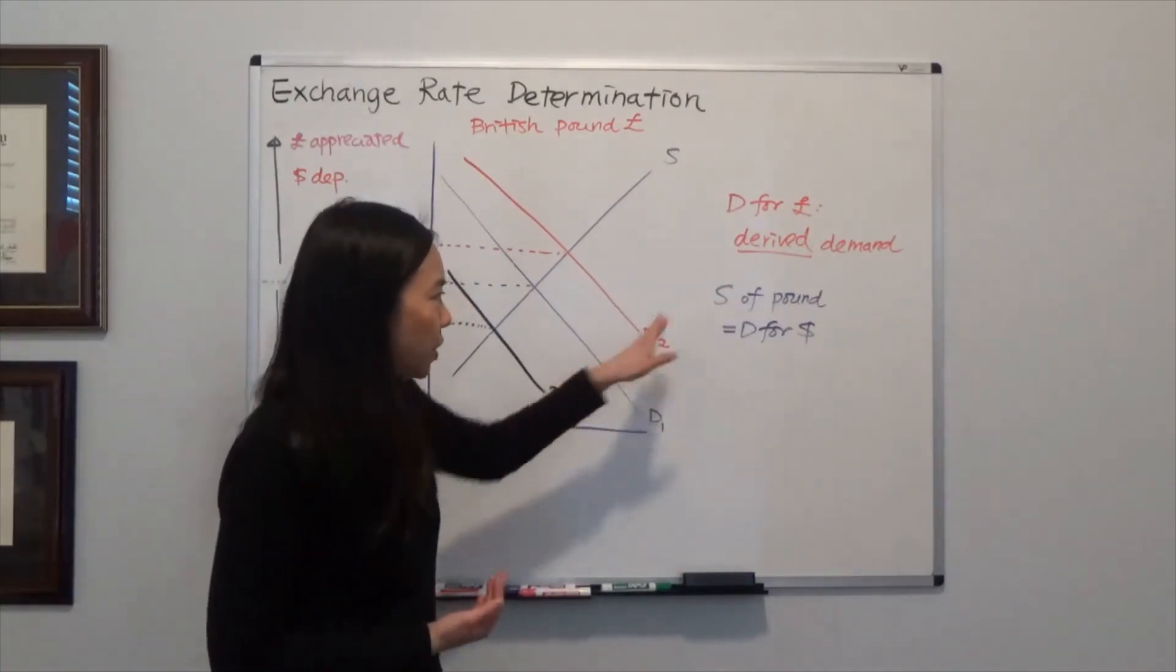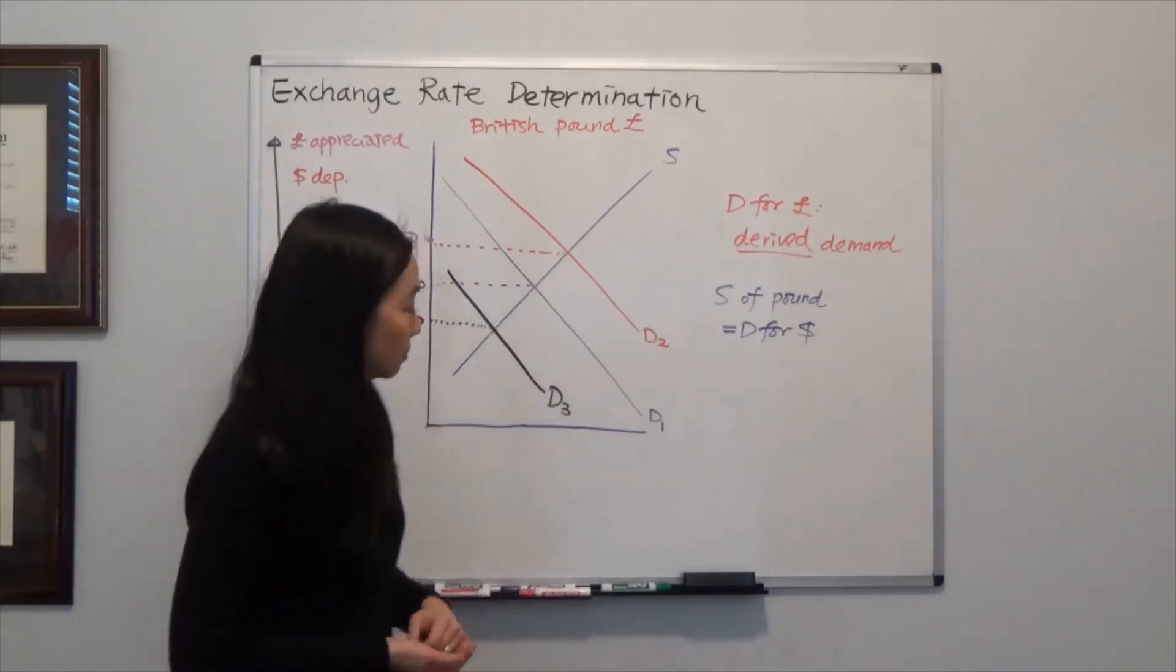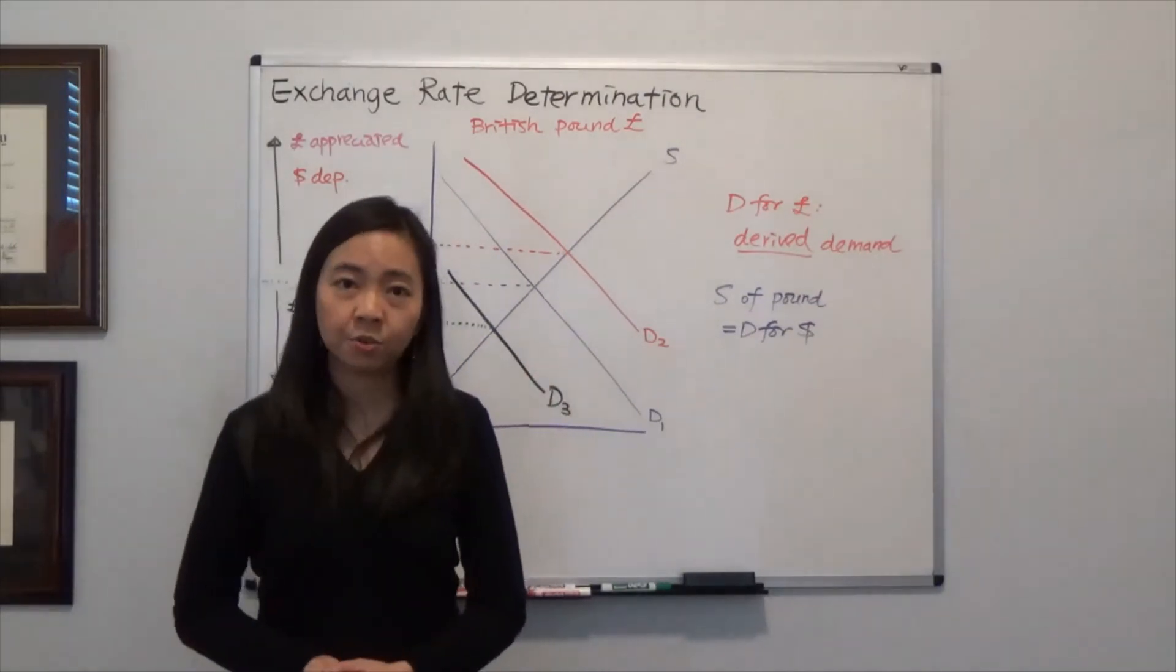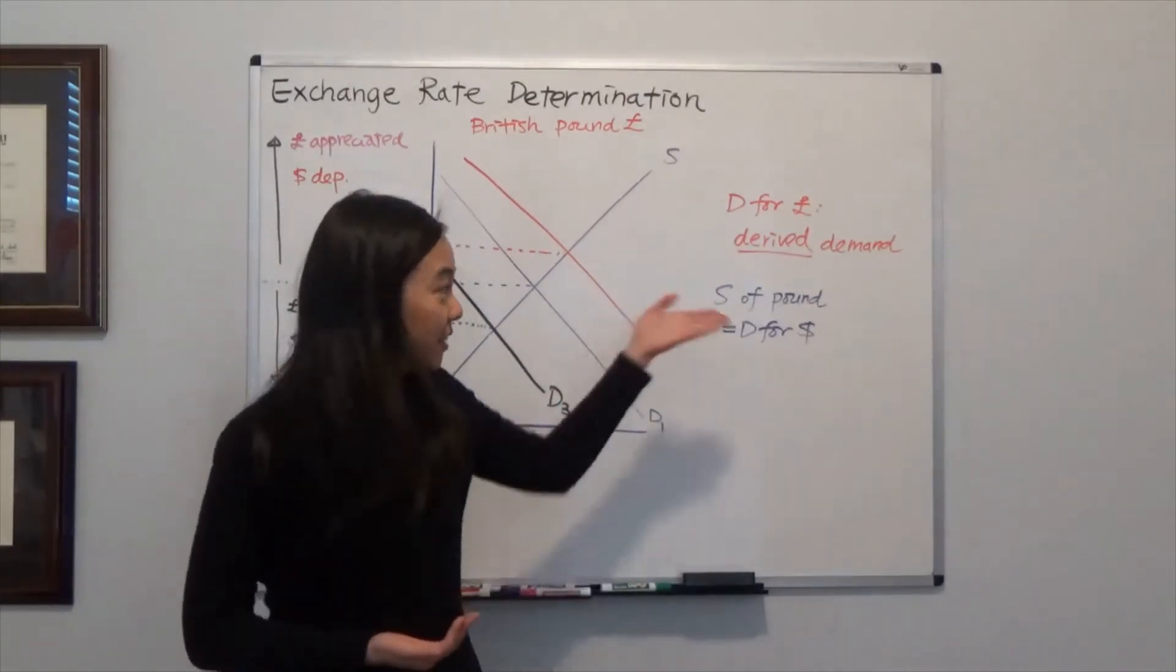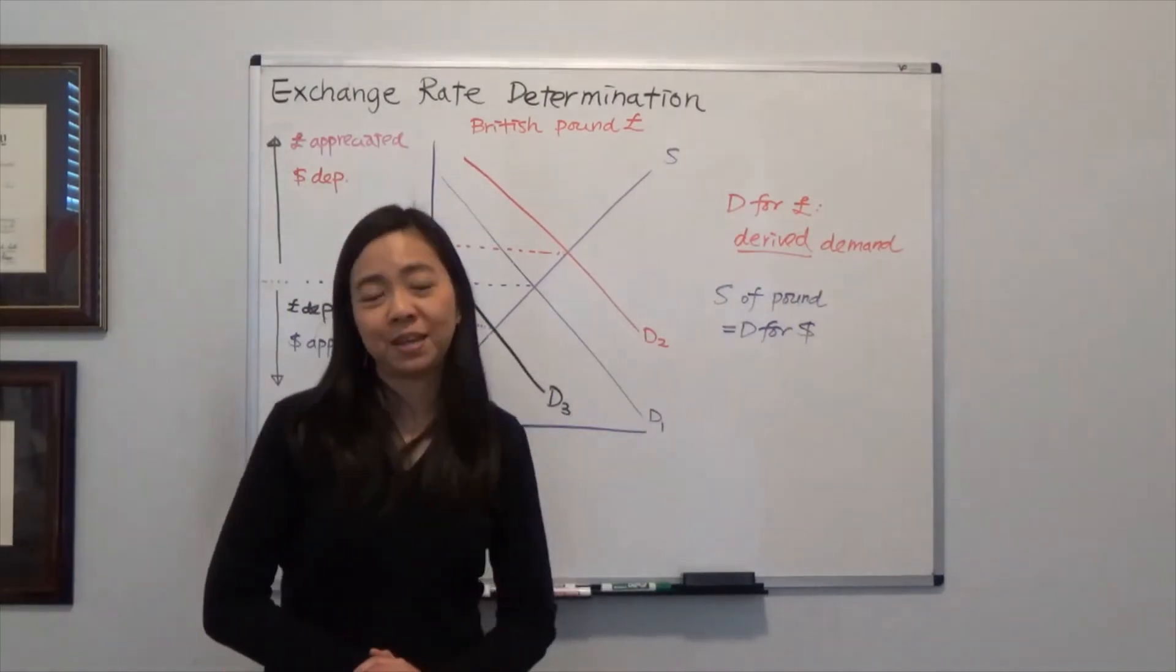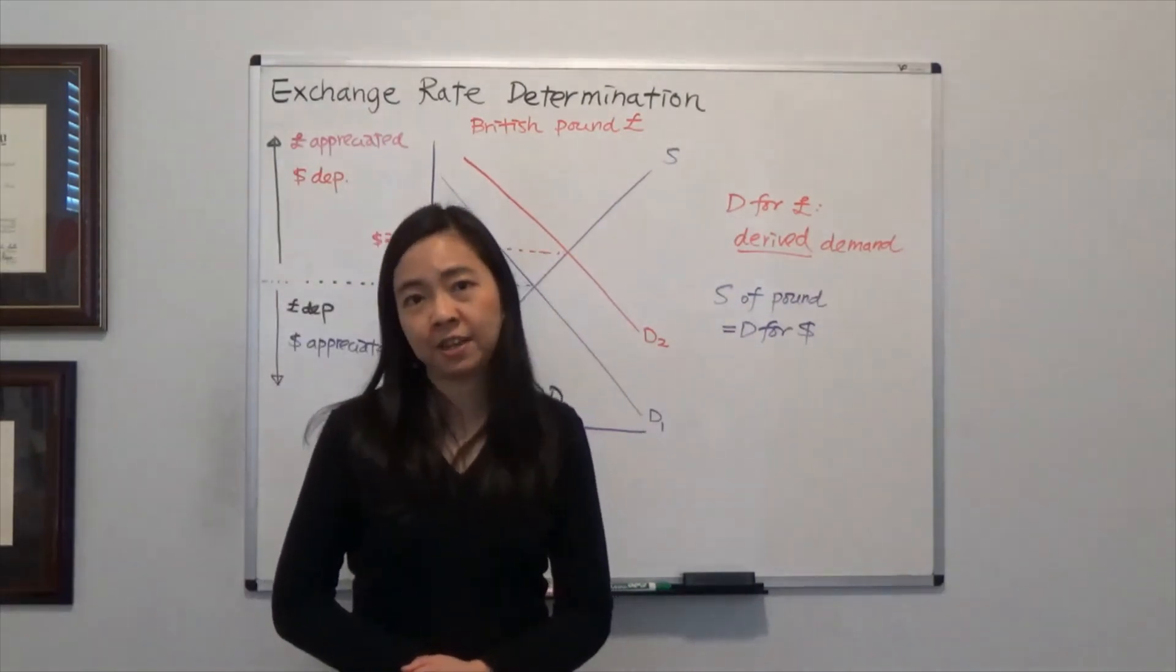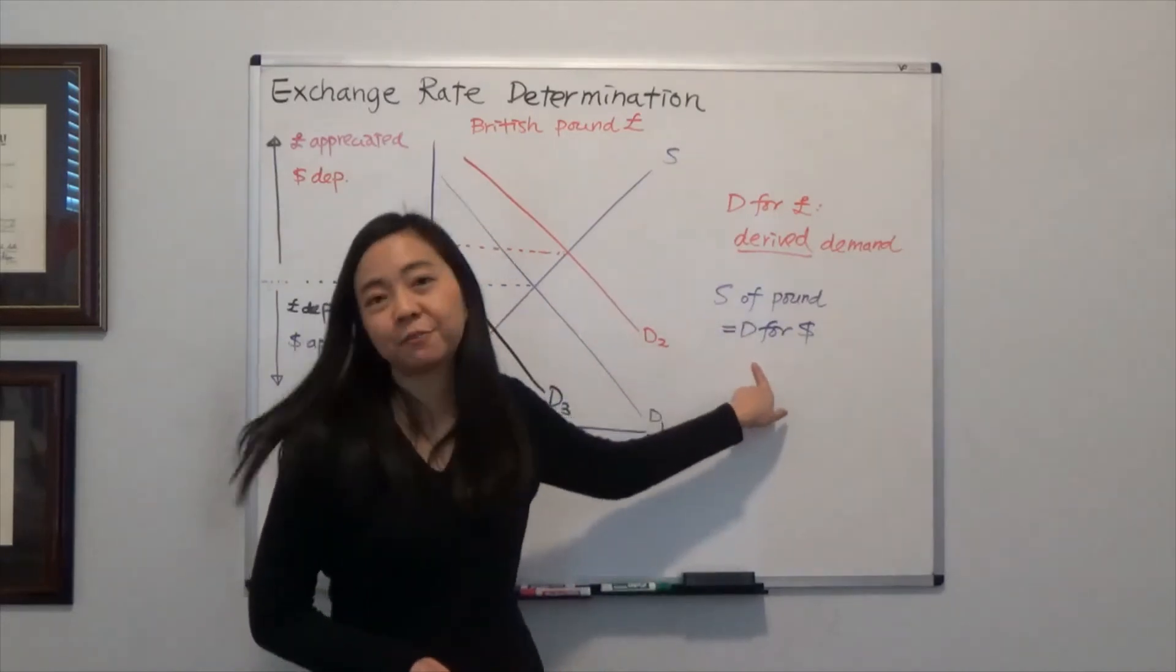Where does the supply of Pounds come from? British people are willing to sell British Pounds in return for dollars because they need dollars for some reason. Maybe they want to travel in the United States, study in the United States, or invest in U.S. firms. Therefore, the supply of Pounds actually comes from the demand for dollars.